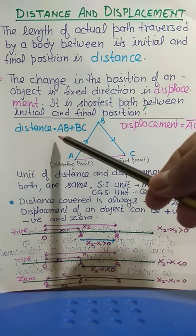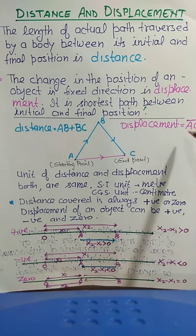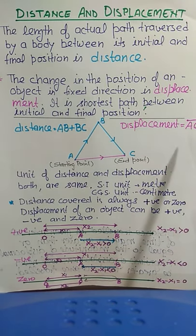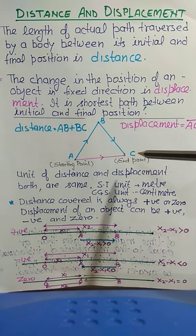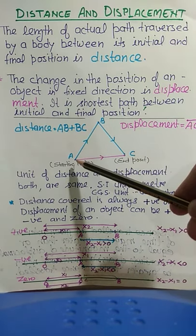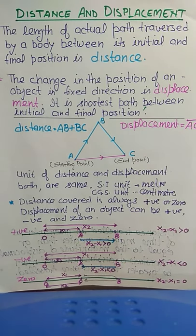In distance there is no direction, but displacement is shown by a vector because displacement is a vector quantity. Distance has only magnitude, while displacement has magnitude with direction. The direction of displacement is always from the starting point towards the end point — from A to C.